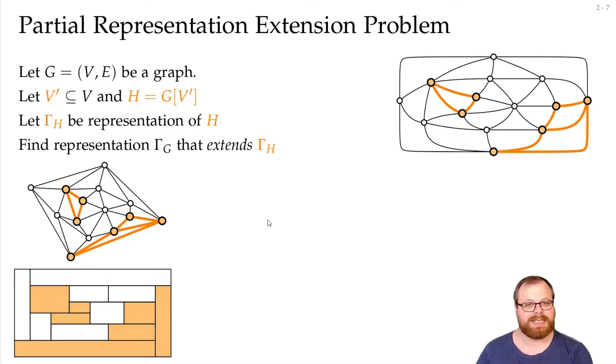This problem has been extensively studied in the previous years for many different representation types. And for many of those we can solve this problem in polynomial time. For example for interval graphs and unit interval graphs. Here every vertex is represented by an interval. And in the case of unit intervals by an interval of length 1. And two vertices have an edge if and only if these two intervals intersect.